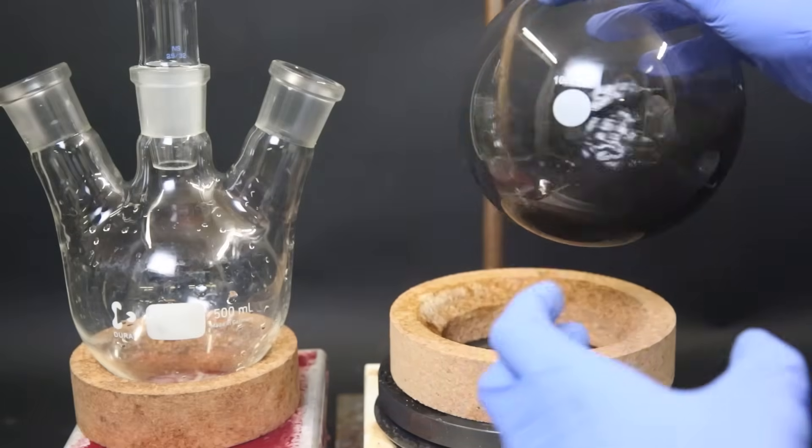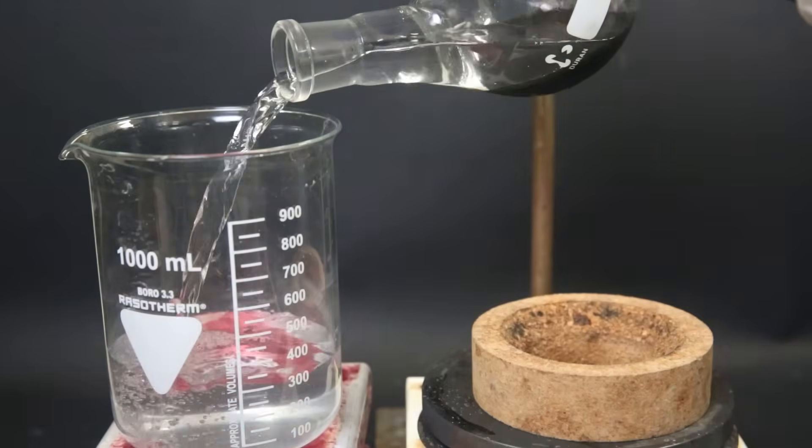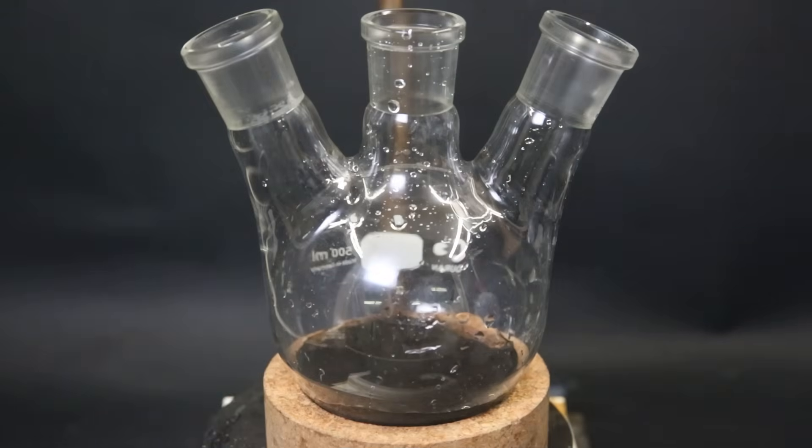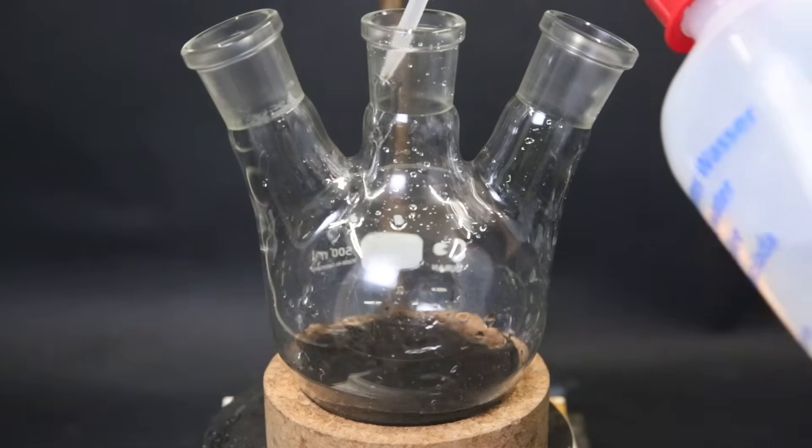Now with the help of some distilled water, I transfer all of the catalyst to another flask. I decant all the excess water and then I add a fresh layer of water to cover all of the nickel. Now I have activated Raney nickel.